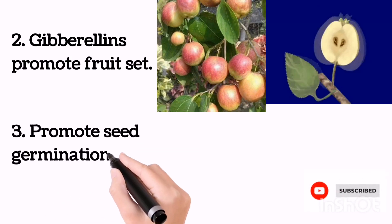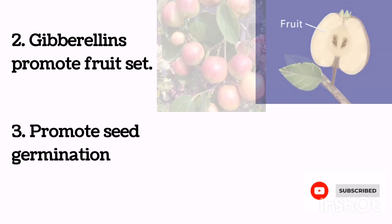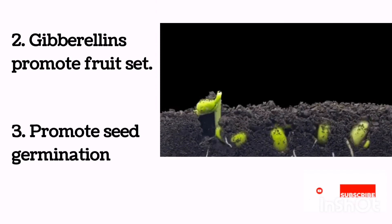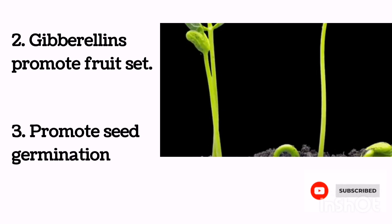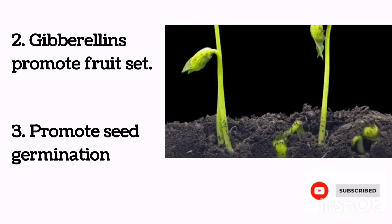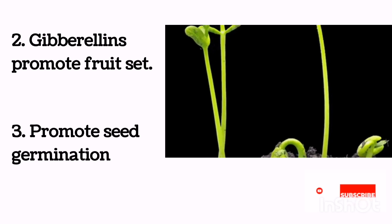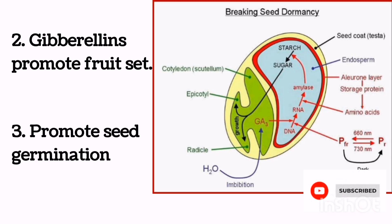Another role of gibberellins is seed germination. Seed germination may require gibberellins for one of several possible steps: activation of vegetative growth of the embryo, weakening of the growth-constraining endosperm layer surrounding the embryo, and mobilization of stored food reserves. Gibberellin promotes alpha-amylase enzyme production to hydrolyze stored starch in seeds during seed germination.